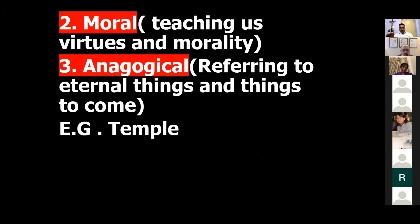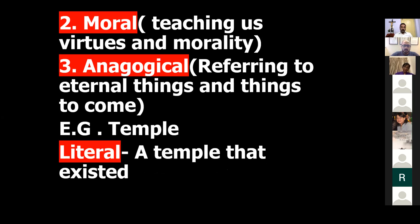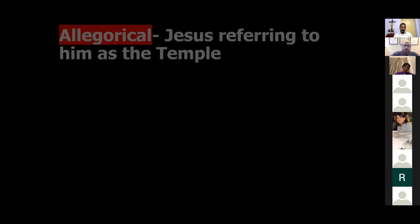One example we saw is the temple. Literally, the temple existed. Allegorically, Jesus says he is the temple. Morally, Paul calls us the temple of the living God and says we have to glorify God in it. And anagogically, it refers to the future temple — the New Jerusalem.